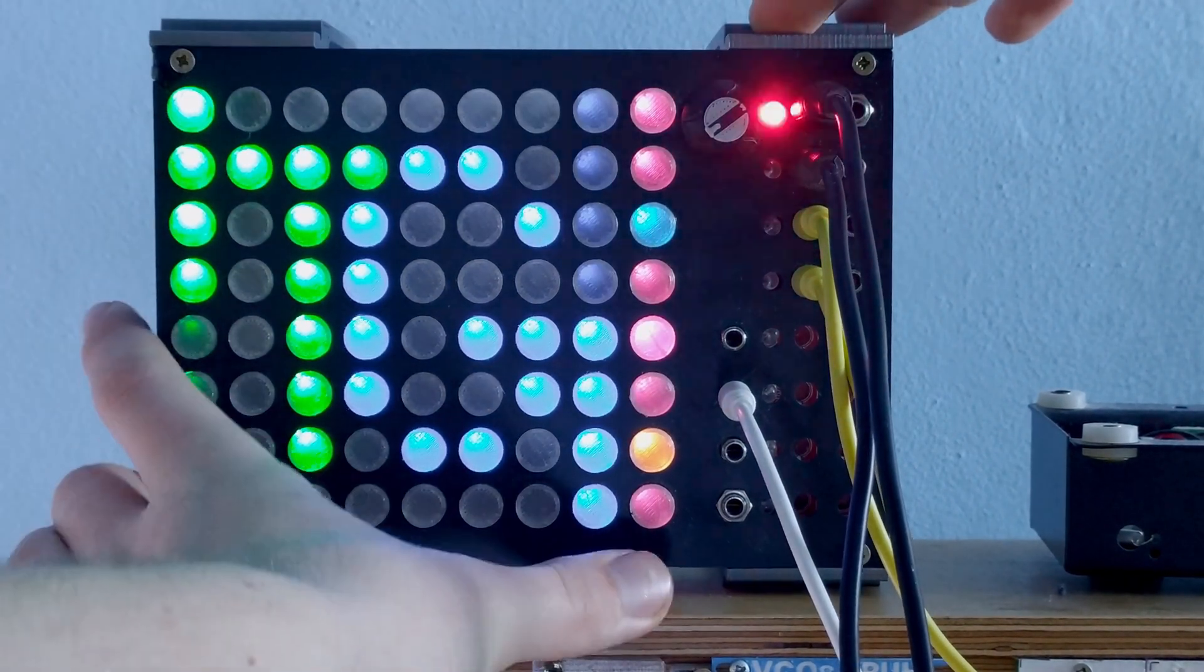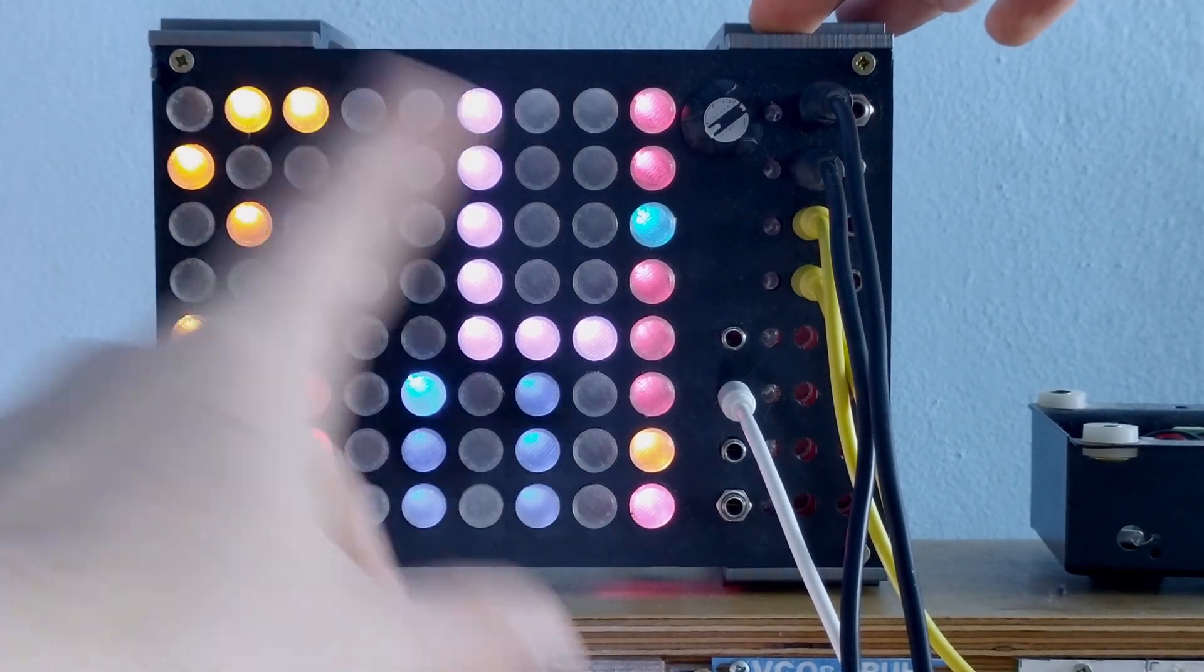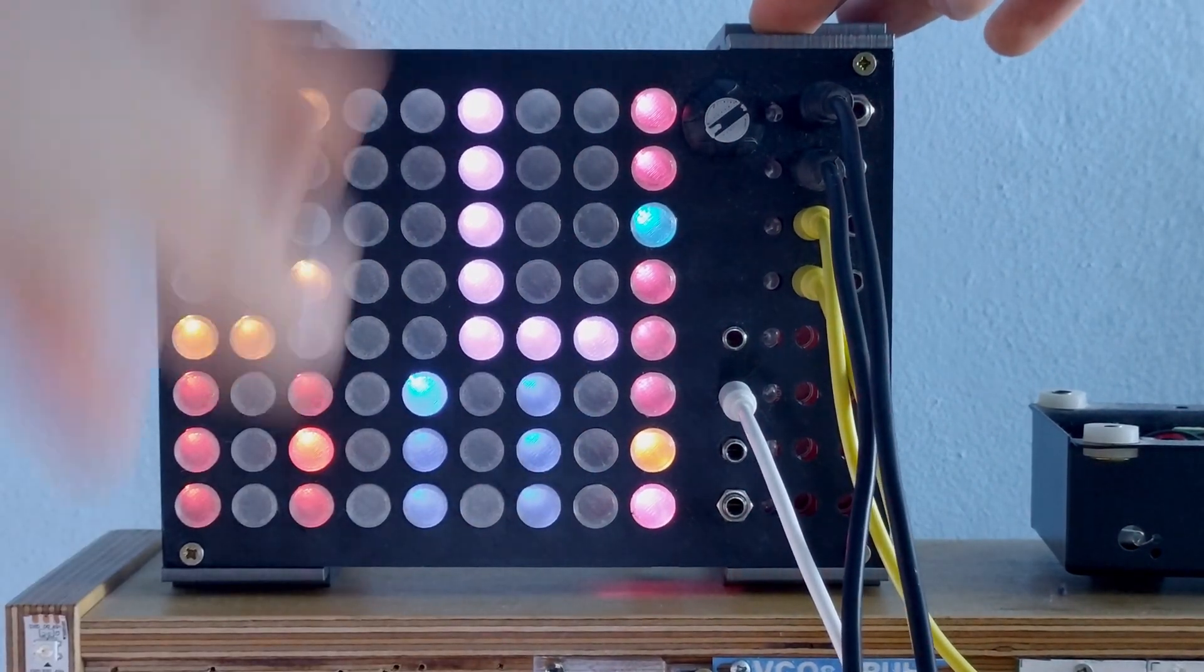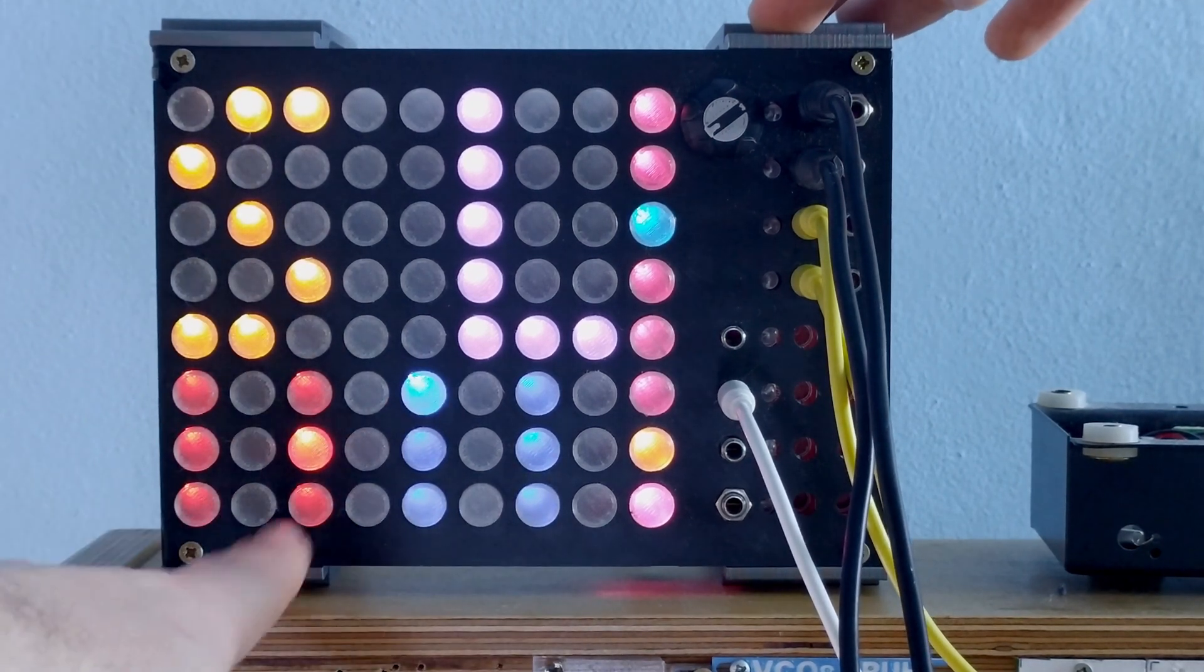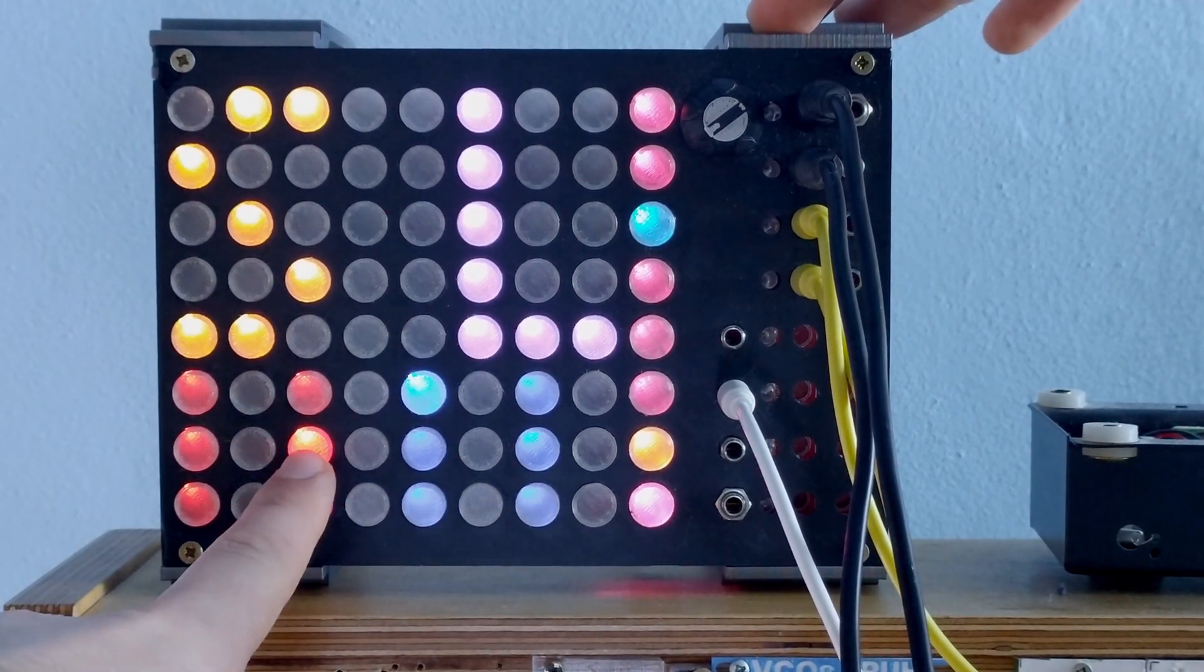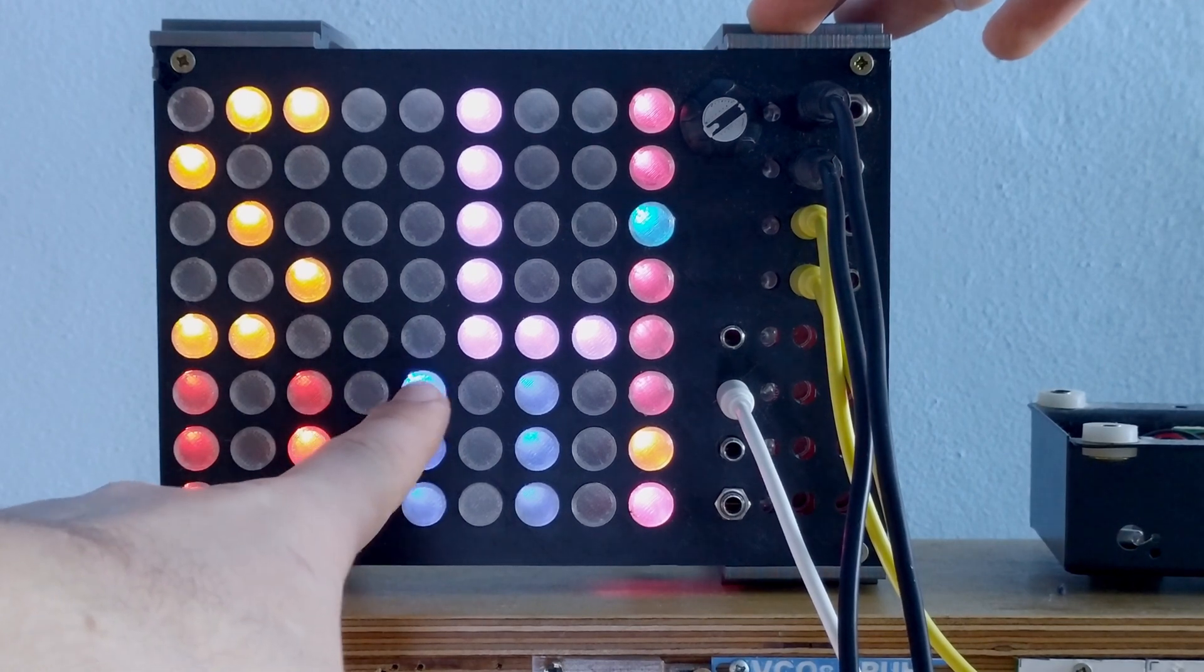So you can select if each channel is acting as like a trigger or a gate, just by simply selecting one of these. This button doesn't do anything yet. And this button is the save and load menu. So you have six save spots, six load spots, and it shows you which is the last you have saved to and which is the last you have loaded from.